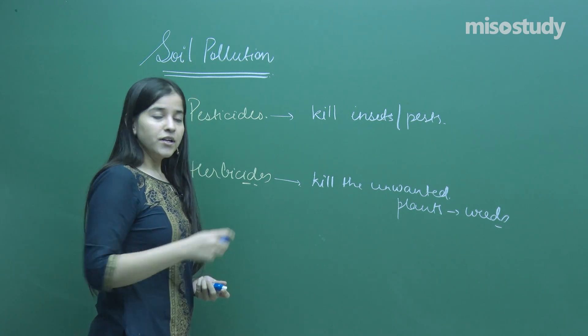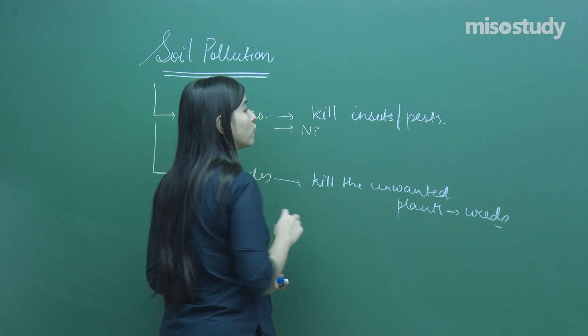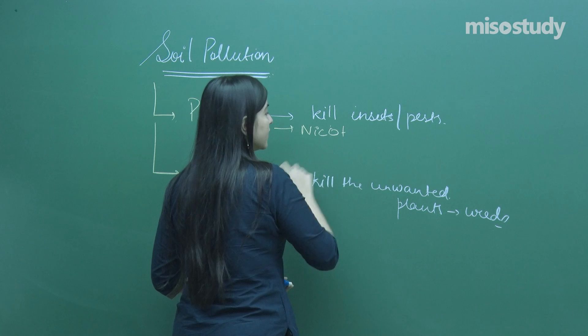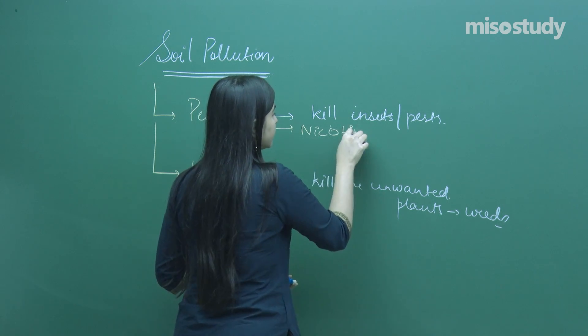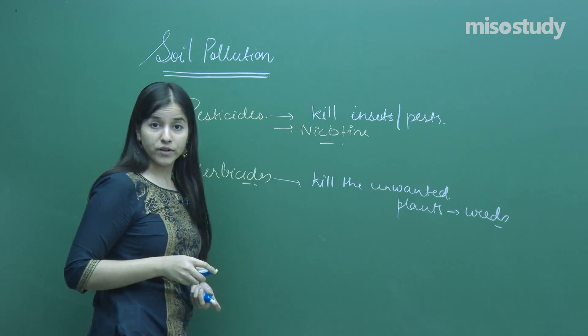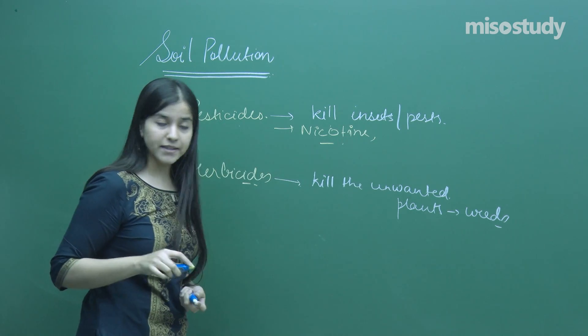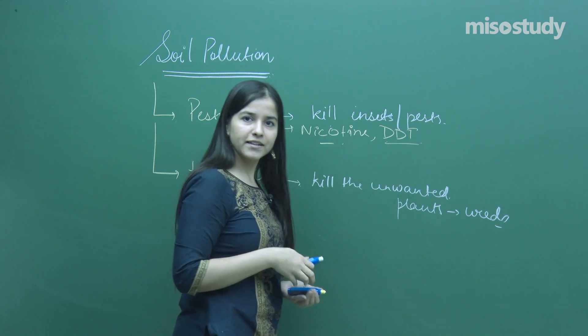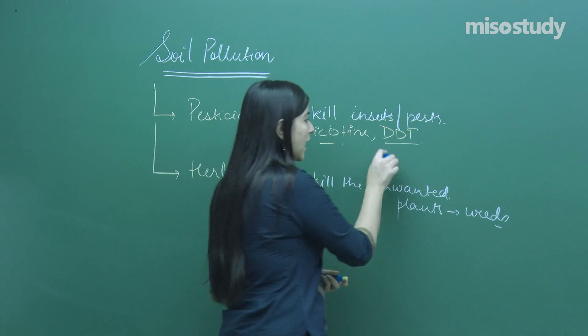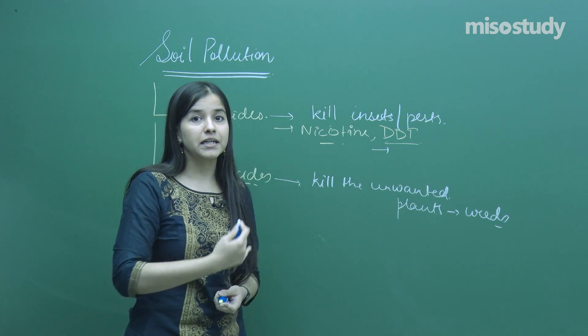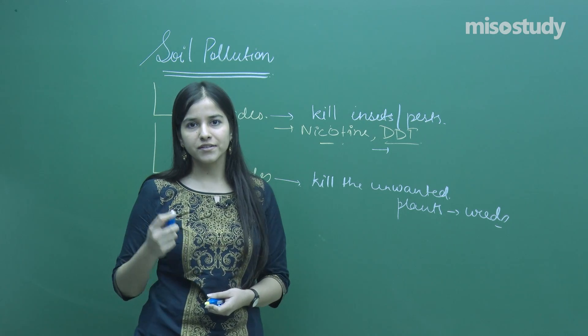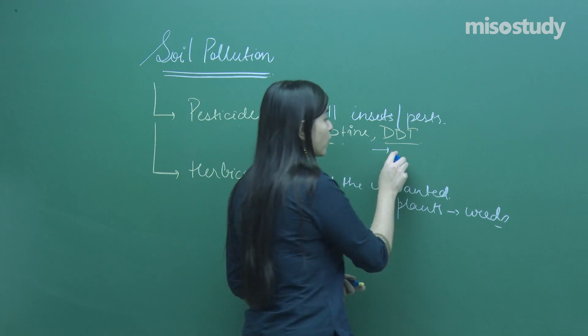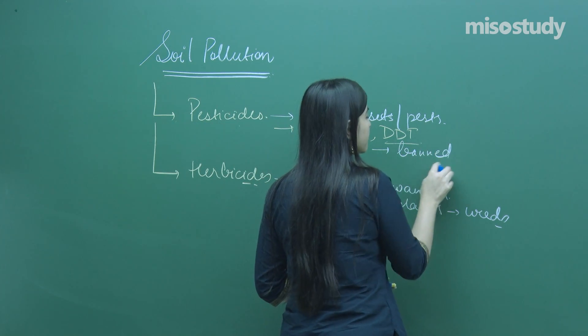In earlier times, nicotine was employed as a pesticide even before World War II. Later, DDT, dichlorodiphenyl trichloroethane, came into use. This DDT was severely affecting our liver and aquatic life, entering the food chain, which is why it has been banned.